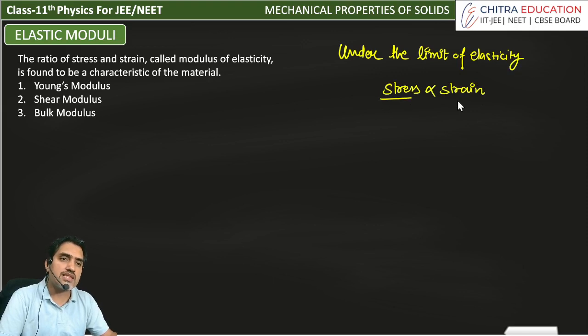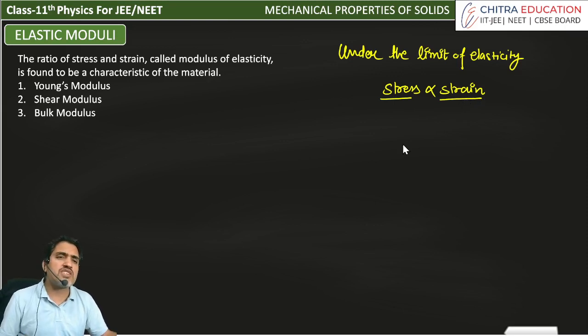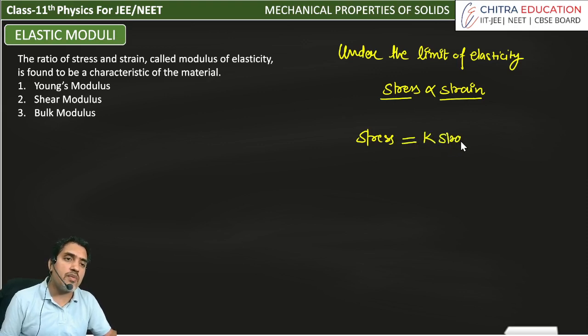Stress is directly proportional to strain and these stress and strain are different categories. When we remove the sign of proportion, we have a constant that is K, and we have said that the constant was modulus of elasticity.